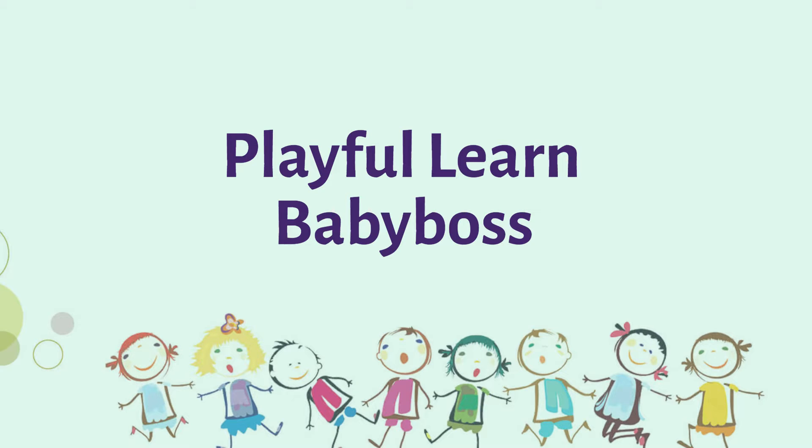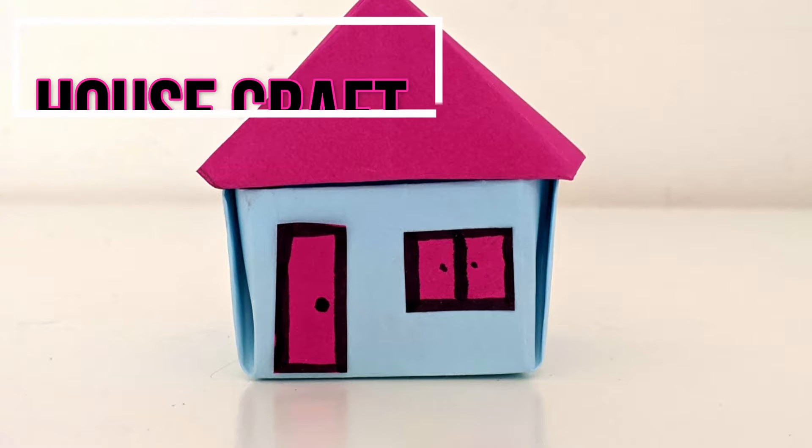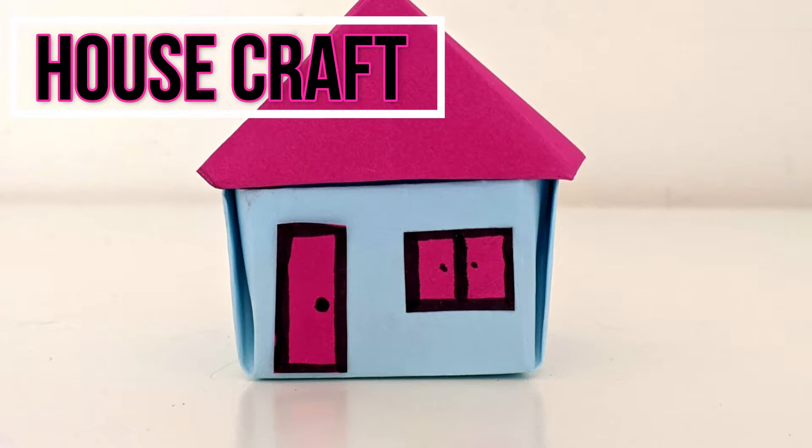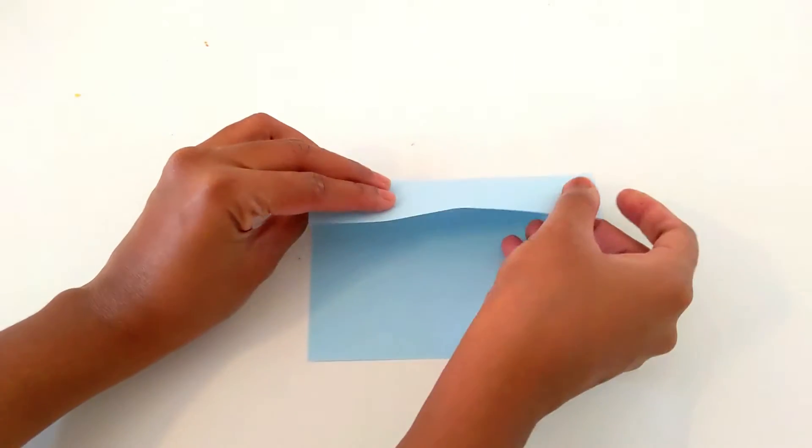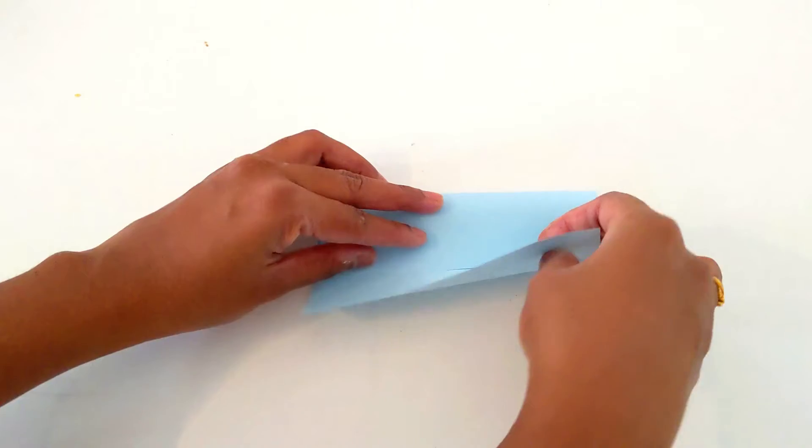Hi viewers, welcome to Playful Learn Baby Boss. Today we are going to learn how to make a paper house. For this, I am taking square-shaped papers, one blue and one pink.